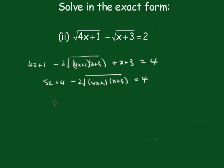We get minus 2√((4x+1)(x+3)) equals minus 5x. Squaring both sides,